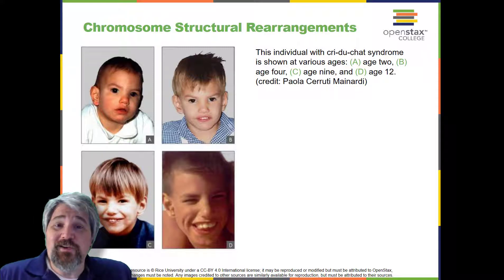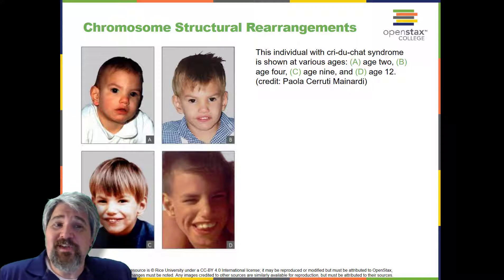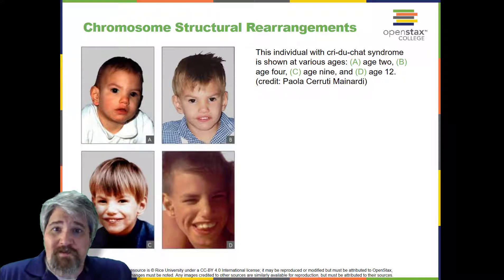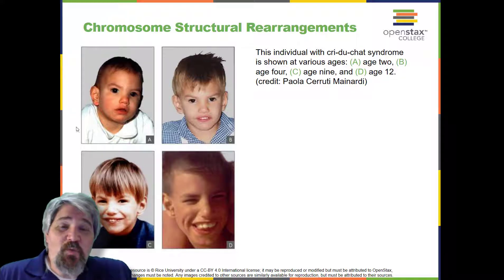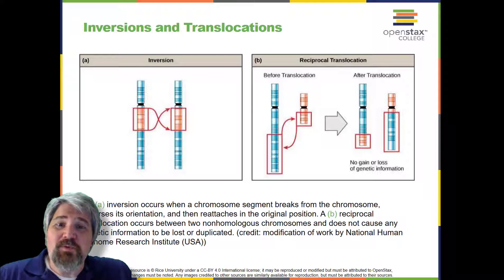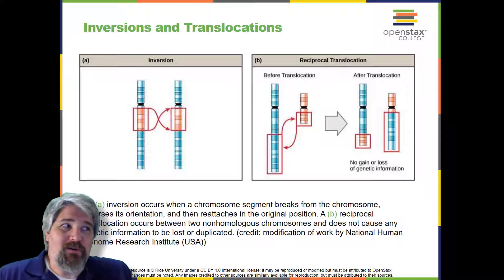Infants with this genotype emit a characteristic high-pitched cry upon which the disorder's name is based. Chromosome inversions and translocations can be identified by observing cells during meiosis, because homologous chromosomes with a rearrangement in one of the pair must contort to maintain appropriate gene alignment and pair effectively during prophase 1. A chromosome inversion is the detachment, 180-degree rotation, and reinsertion of part of a chromosome. Unless they disrupt a gene sequence, inversions only change the orientation of genes and are likely to have more mild effects than aneuploid errors.